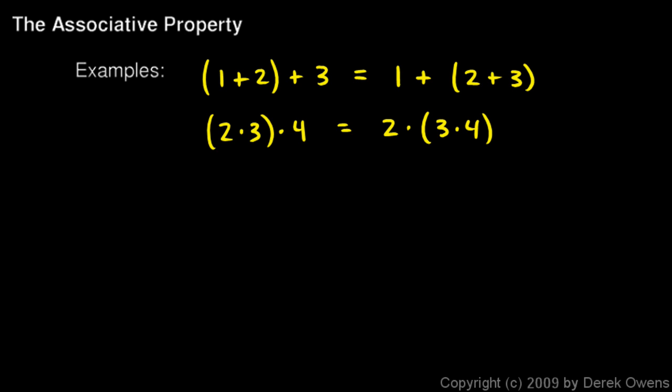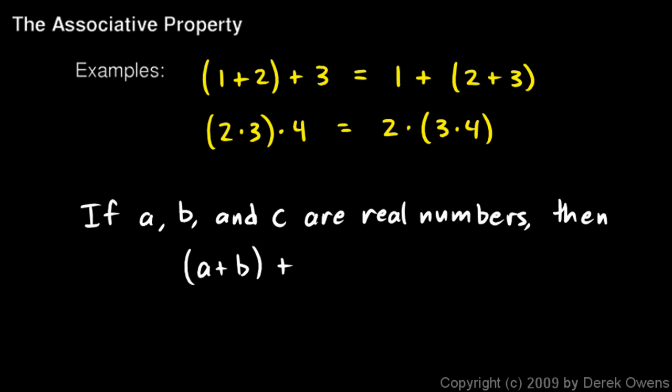We can state this concept with a general rule. If a, b, and c are real numbers, just means they're numbers on the number line, then a plus b in parentheses plus c will equal a plus parentheses b plus c. So it doesn't matter if I group the a and the b, or the b and the c. The result will be the same either way. And the same thing can be stated with multiplication: a times b in parentheses times c will be the same as a times in parentheses b times c.